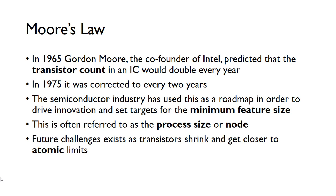They fit more transistors on by making them smaller. The size is defined by a minimum feature size, often called the process size or the node. They keep trying to make this process size smaller, though future challenges exist because you can't keep shrinking transistors indefinitely — you'll eventually reach atomic limits, where transistors cannot get smaller than the size of atoms themselves.